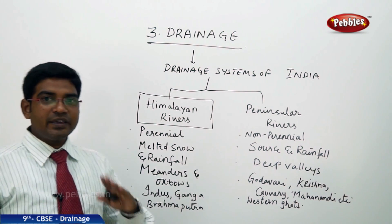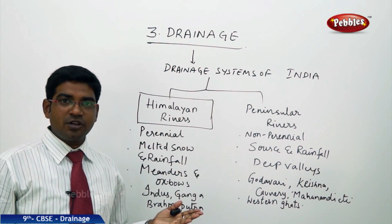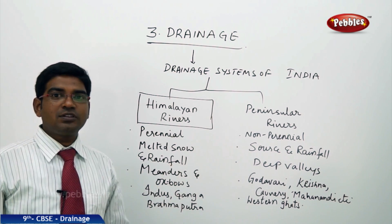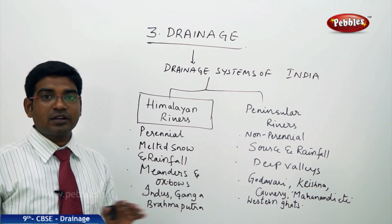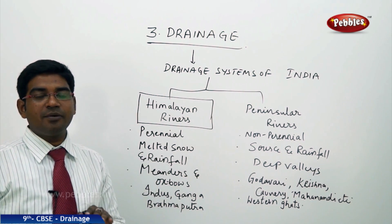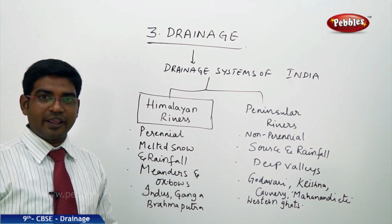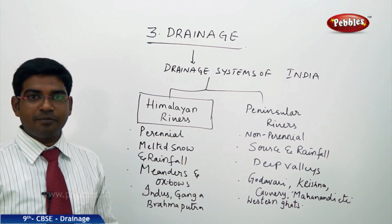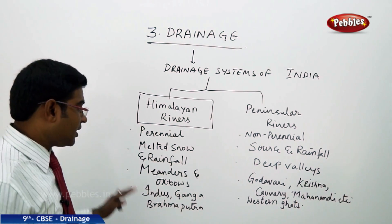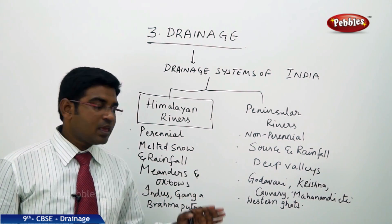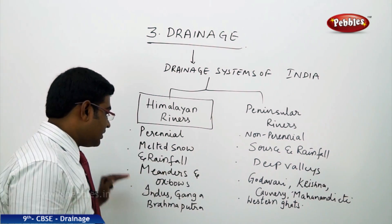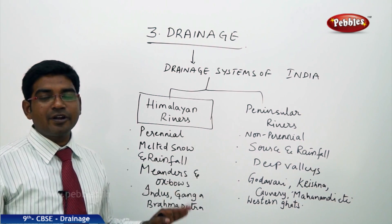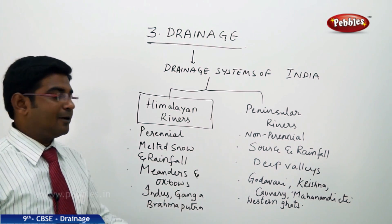The Himalayan rivers originate in the Himalayan region, flow continuously throughout the year, and are completely filled with water all year round. They never dry up and have no seasonal impact on them. They form many meanders and oxbows. Indus, Ganga, and Brahmaputra are the important Himalayan rivers of India.